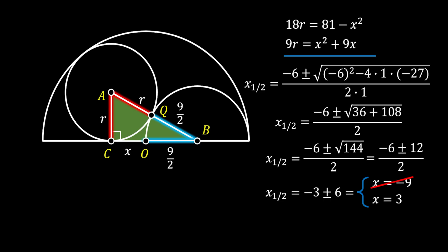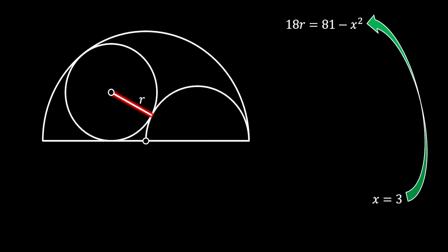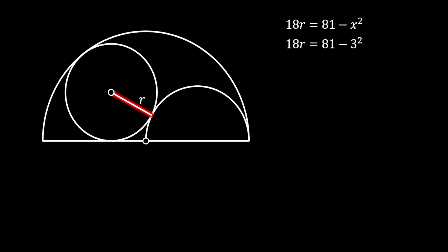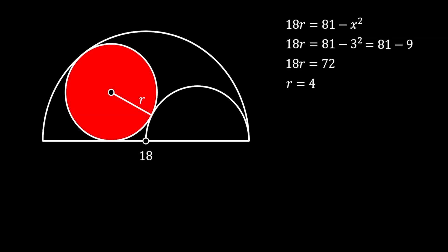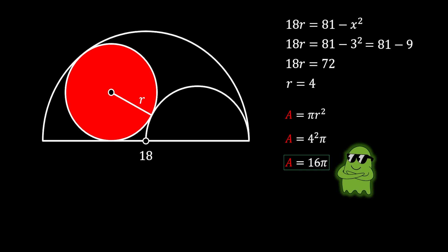Now we substitute x = 3 into our first equation. We get 18R = 81 − 9 = 72, which means the radius of our inscribed circle is equal to 4. Since the area of a circle equals π·R², substituting R = 4 gives us an area of 16π square units. That is our solution.